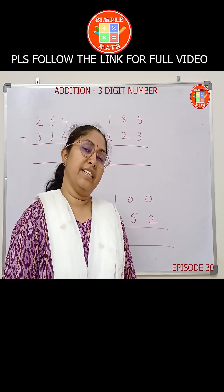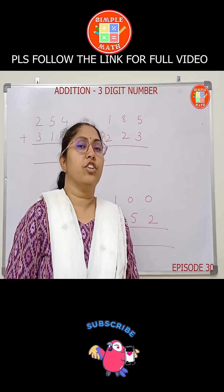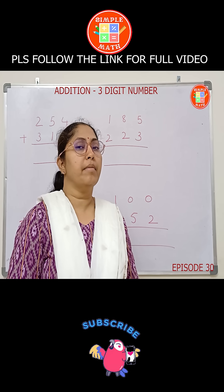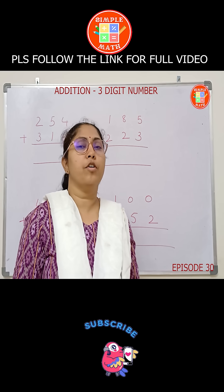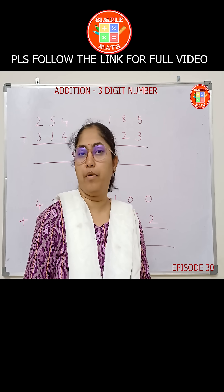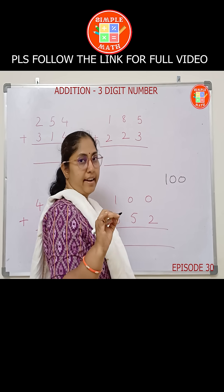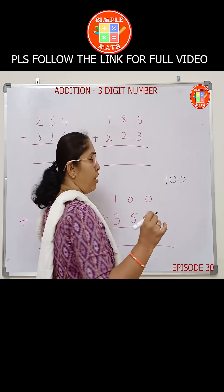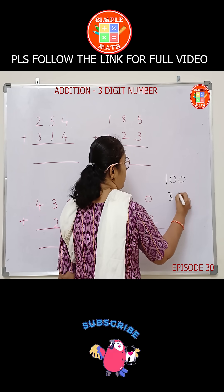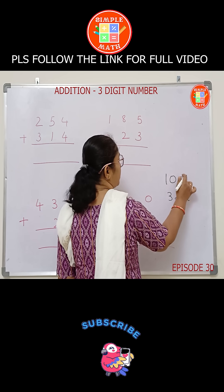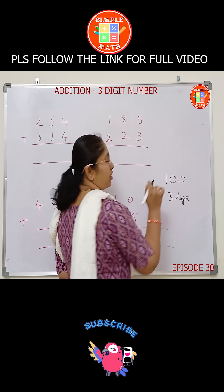Hello children, today we will see addition of a 3-digit number by 3-digit number or a 2-digit number. 100 is called a 3-digit number because it has got 3 digits: 1, 2, 3.